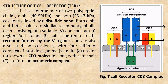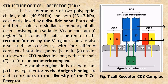Both alpha and beta chains contribute to the receptor formed by the variable regions and are also associated non-covalently with four different complex proteins — gamma, delta, epsilon — known as the CD3 molecule, along with the zeta chain, to form an octameric complex. The variable regions in both alpha and beta chains together form the antigen binding site and contribute to the diversity of T cell receptor.